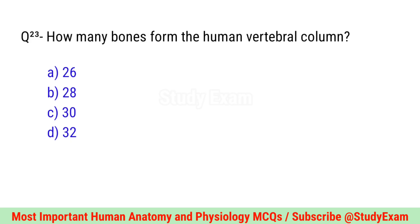Question number twenty-three. How many bones form the human vertebral column? Correct option is A. 26.